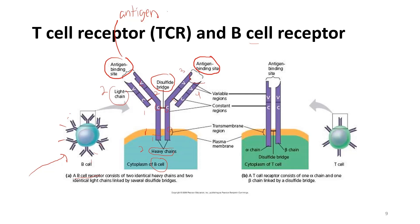Now let us look at the structure of the T cell receptor. In contrast to the B cell receptor, the T cell receptor consists of two polypeptide chains: an alpha chain and a beta chain. Both chains consist of two regions — variable region V and constant region C — and they also have a transmembrane region and a short tail that spans through the cytoplasm of the T cell. The antigen binding site will bind to antigen presented on the surface of the host cell by MHC.